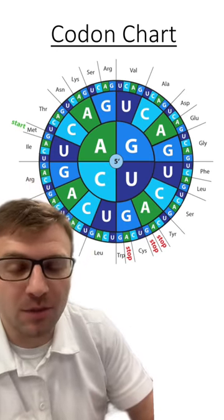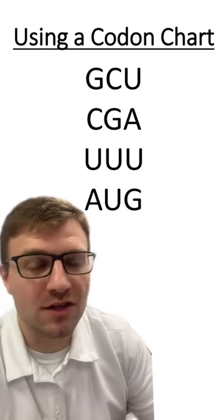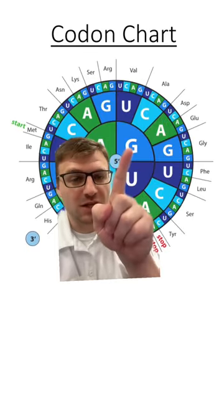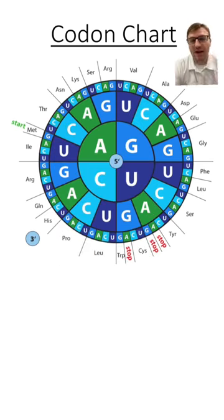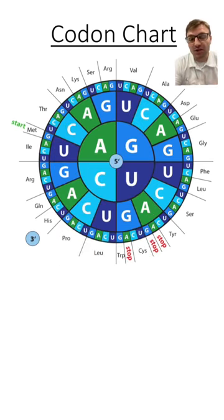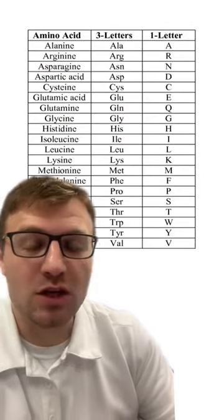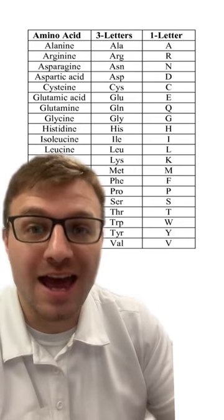Let's do an example of how to get through one of these codon charts. Our first codon is going to be G, C, U. So we start out here with G, then go to C, and then finally to U. The abbreviation of the amino acid that GCU codes for is ALA. And as we can see, ALA stands for alanine. So the codon GCU codes for the amino acid alanine.